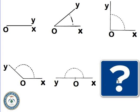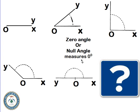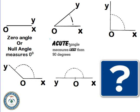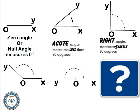Now let's look at the nature of an angle. First, the zero angle — its measure is zero degrees; it is completely closed and didn't open at all. Next, an acute angle measures less than 90 degrees — it is less than the right angle. The right angle measures exactly 90 degrees, formed by two perpendicular lines.